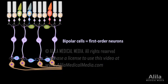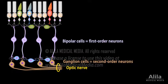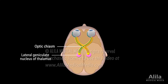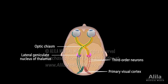The bipolar cells are first-order neurons, and ganglion cells are second-order neurons. The axons of ganglion cells form the optic nerve. The two optic nerves from the two eyes converge at the optic chiasm. Here, the medial half of nerve fibers from each eye cross to the other side of the brain. Most of the fibers then continue to the thalamus and synapse with third-order neurons, whose axons project to the primary visual cortex.